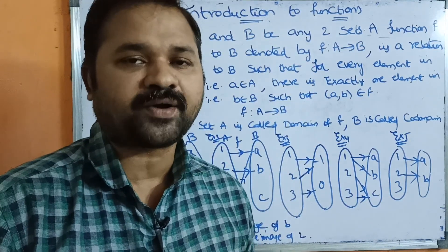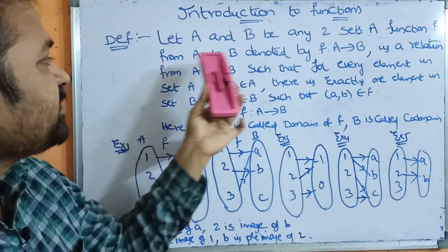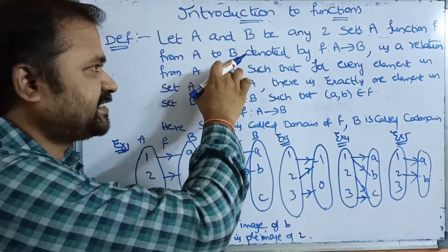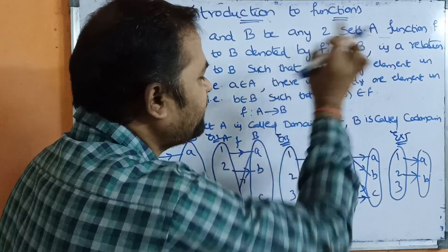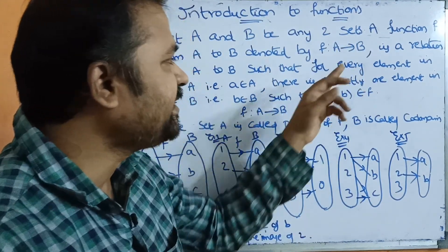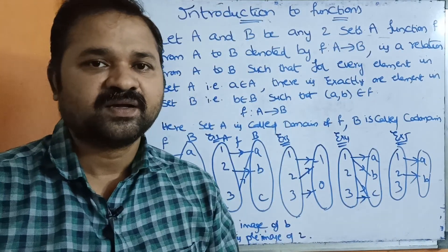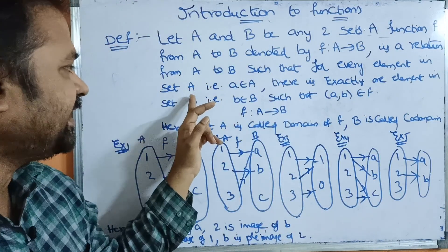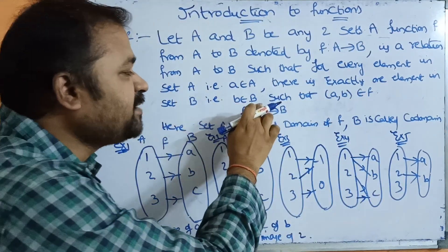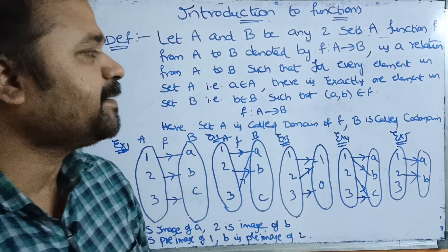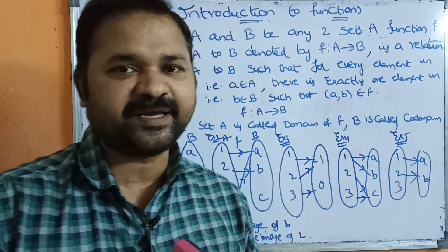Sets are always denoted by uppercase letters. A function F from A to B, denoted by F: A → B, is a relation from A to B such that for every element in set A — that is, small a belongs to capital A — there is exactly one element in set B, that is, b belongs to B, such that the pair (a, b) belongs to F.